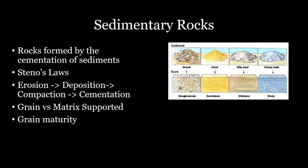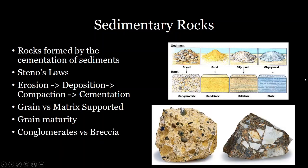Different grain sizes cement and form different types of rock. Gravels and larger particles form a rock called a conglomerate, whereas sand forms sandstone, silt forms siltstone, and mud and clays form mudstones and shales. There are two different rock types that form from gravel: conglomerates form from well-rounded, older sediments, whereas breccias form from angular, recently formed sediments.